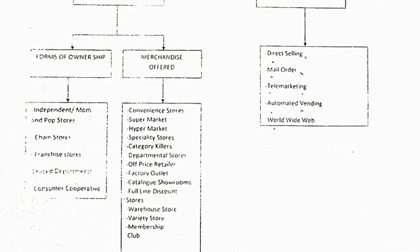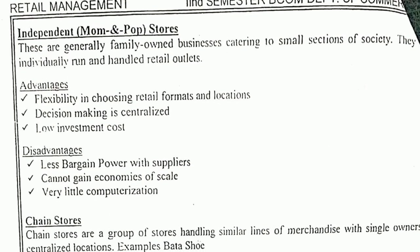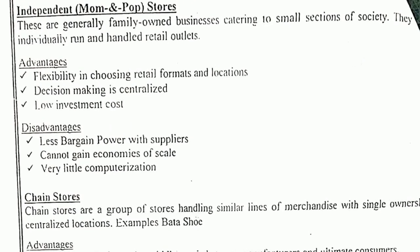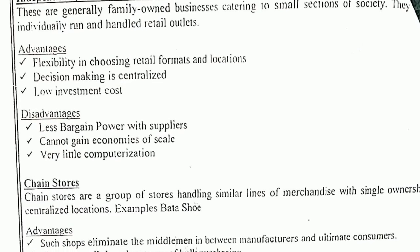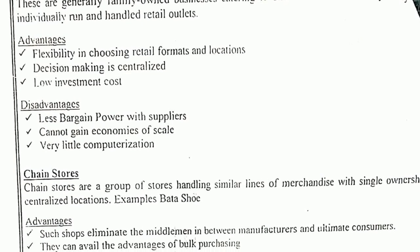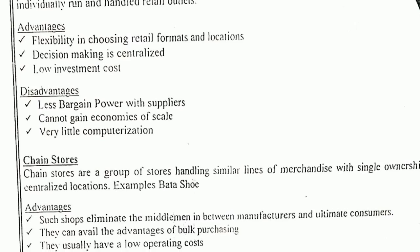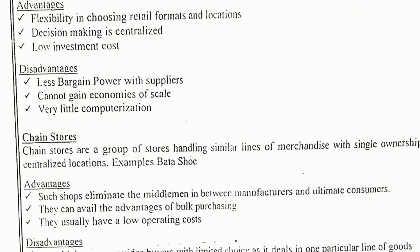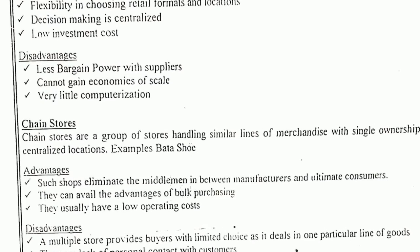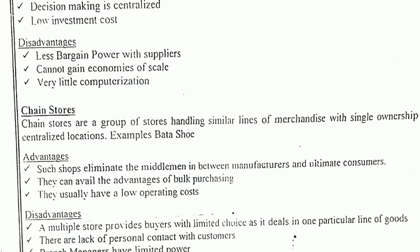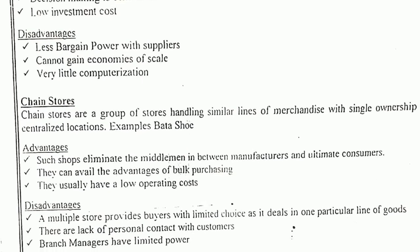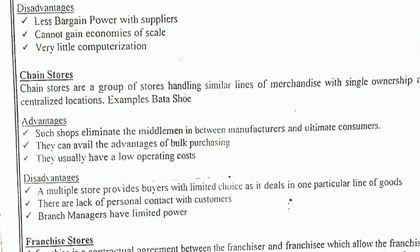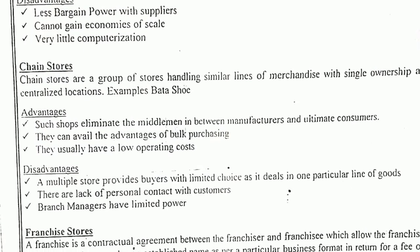Forms of ownership: here the business is run by a particular individual person. Merchandise offer involves more than two or three people coming together to do business. Under forms of ownership, the first type is the independent mom and pop shop — these stores are open in every nook and corner of India. It may be a grocery shop or an electronics shop, but it is carried out by an individual person.